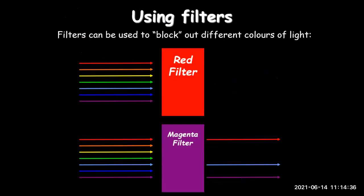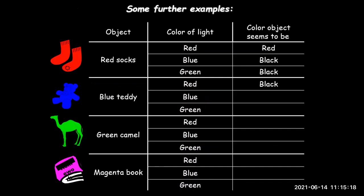Filters can be used to block out different colors of light. A red filter allows only red light to pass through. A magenta filter, since magenta is made up of red and blue, will filter and allow red and blue light through.